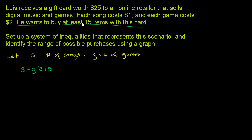It also tells us that he has a gift card worth $25, and each song costs $1 and each game costs $2. So he can't spend any more than $25. How much is he going to spend as a function of the songs and games? Each song costs $1, so he's going to spend $1 times the number of songs.